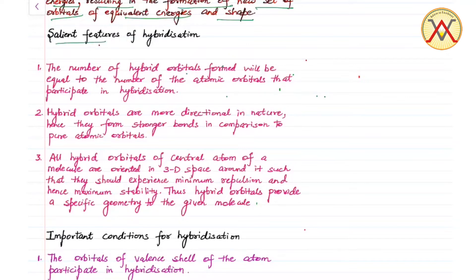Salient features of hybridization. The number of hybrid orbitals formed will be equal to the number of the atomic orbitals that participate in hybridization.